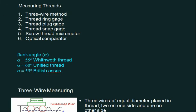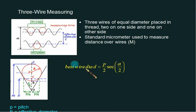Next topic is measuring threads. You can measure threads using three-wire method, thread ring gauge, thread plug gauge, thread snap gauge, screw thread micrometer, and optical comparator. We'll discuss the three-wire method here. Remember the standard angles: Whitworth 55°, Unified 60°, and British 55°.